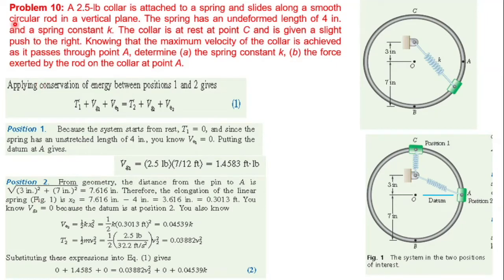A 2.5-pound collar is attached to a spring and slides along a smooth circular rod in a vertical plane. The spring has an undeformed length of 4 inches and a spring constant k. The collar is at rest at point C and is given a slight push to the right. The maximum velocity of the collar is achieved as it passes through point A.